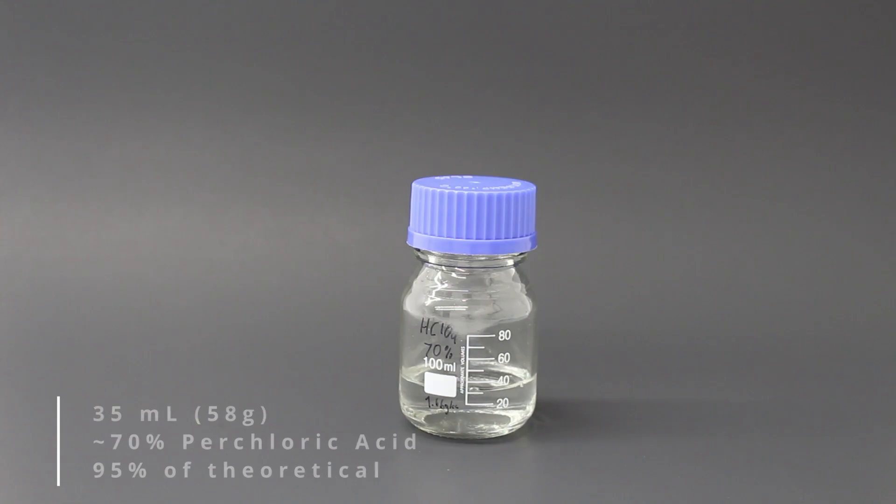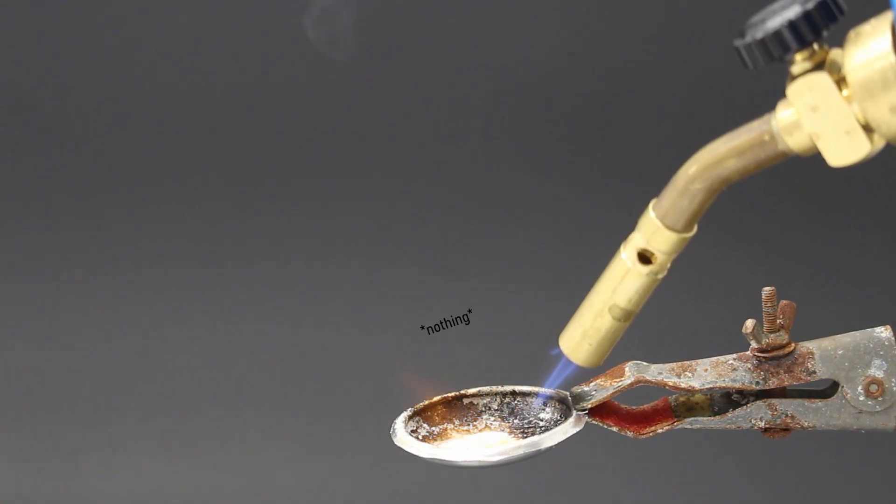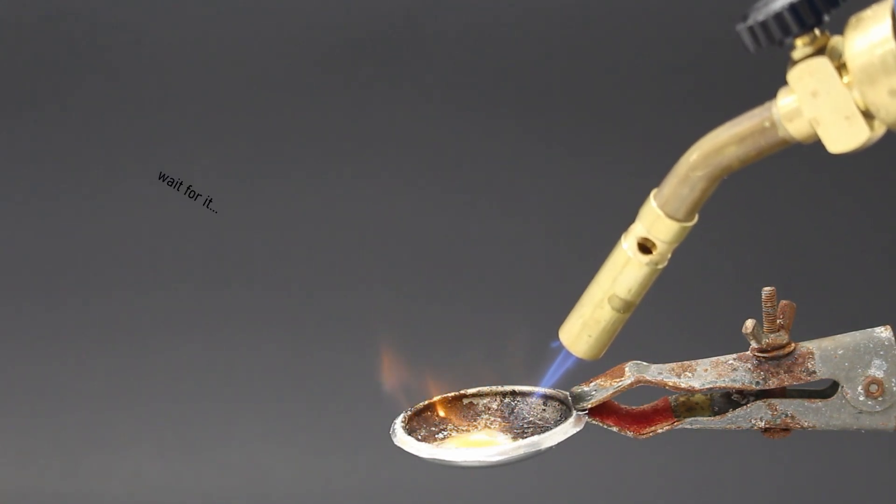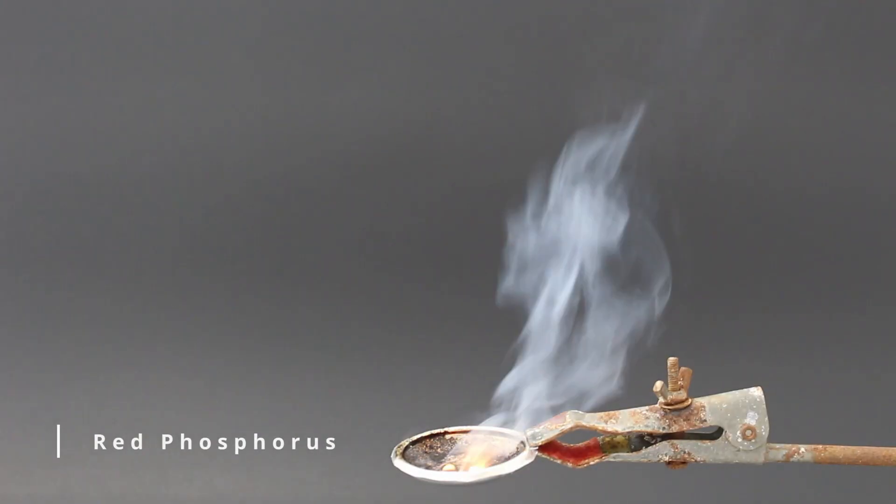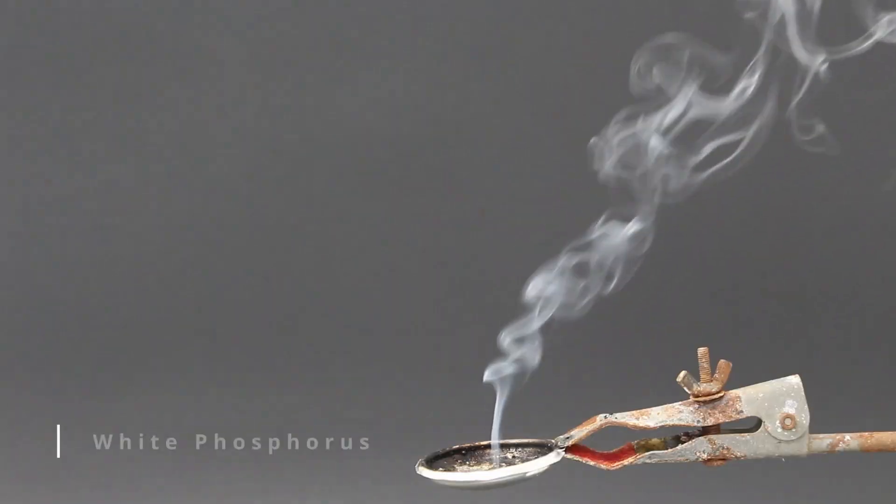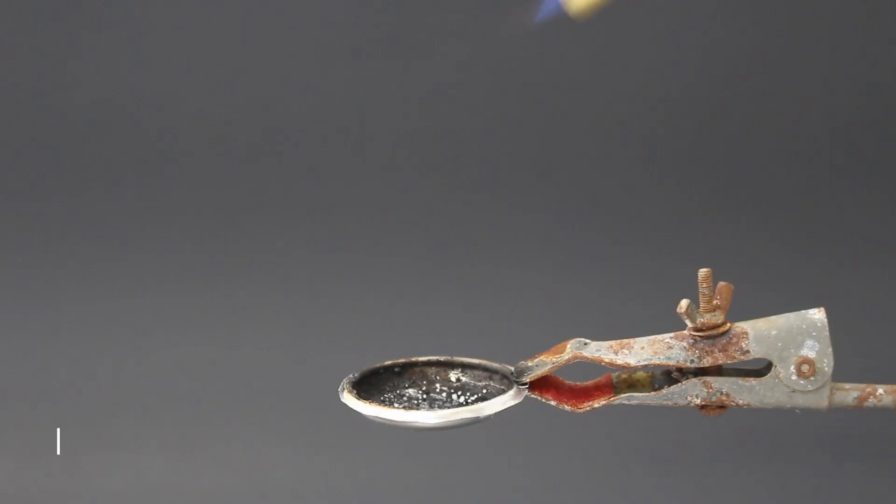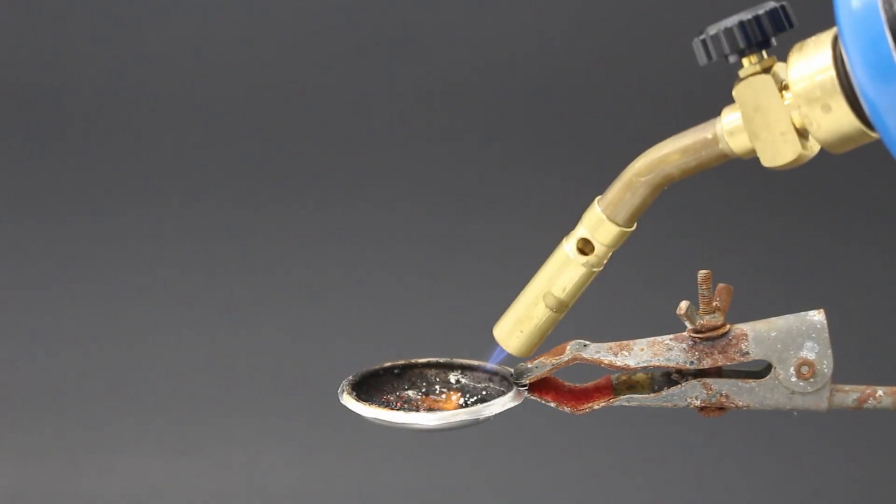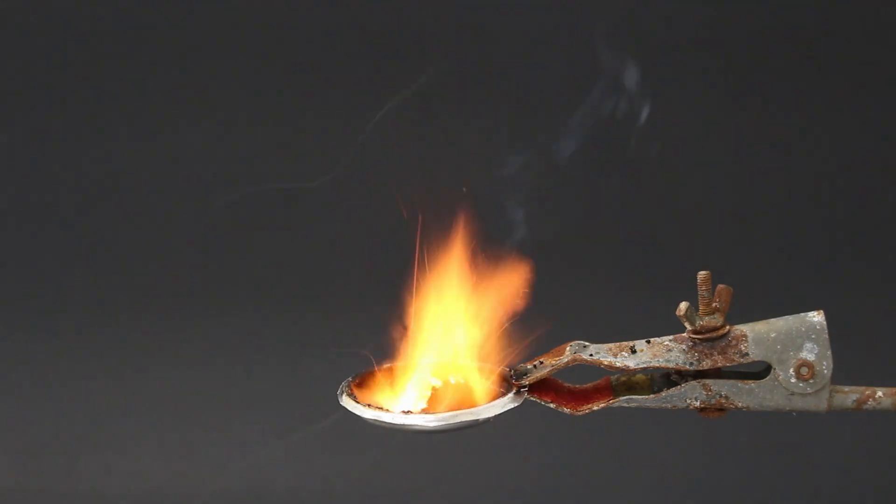Alright let's light some stuff on fire. Here's some reactions with common reducing agents found around the lab. First up we've got hexamine, red phosphorus, white phosphorus, regular sugar, nutella, and sawdust.